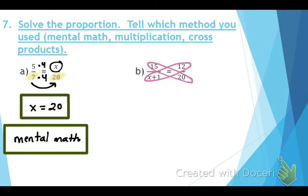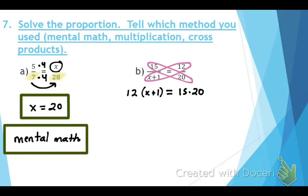Circle diagonally and drop down the equal sign. Put the variable on the left side first. We have 12 times (x + 1) — the x plus 1 goes in parentheses to keep it together. On the right side: 15 times 20. Use the distributive property: 12 times x gives 12x, and 12 times 1 gives 12.